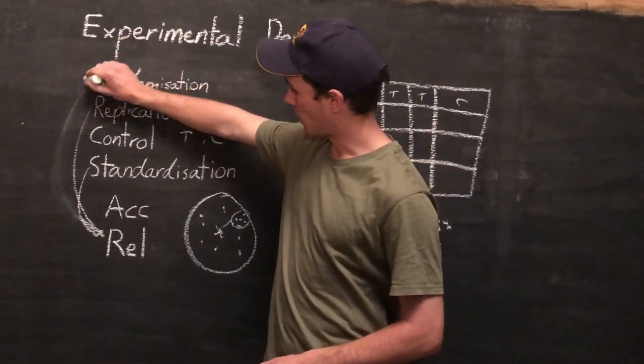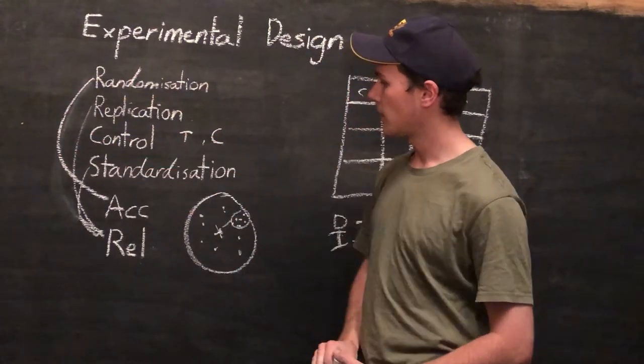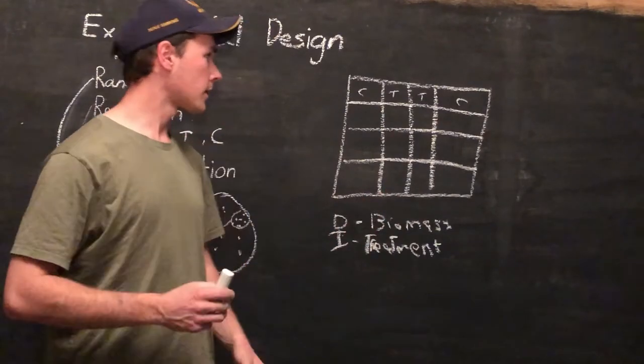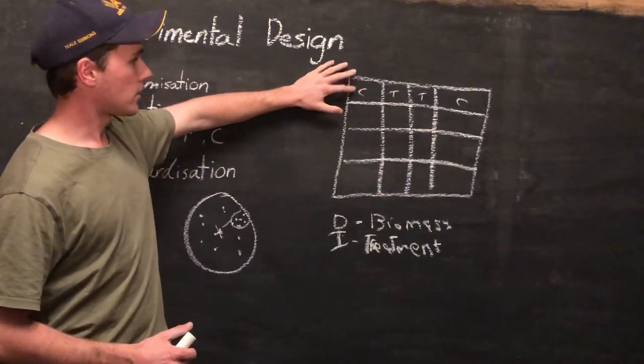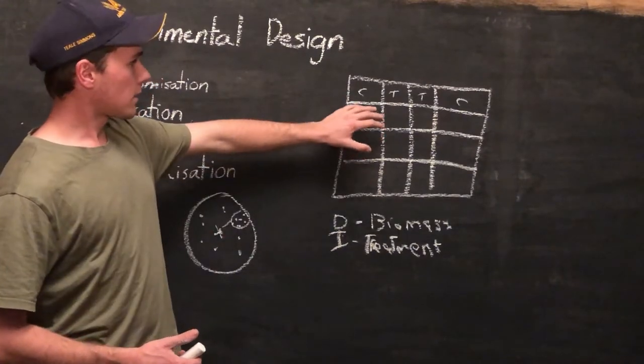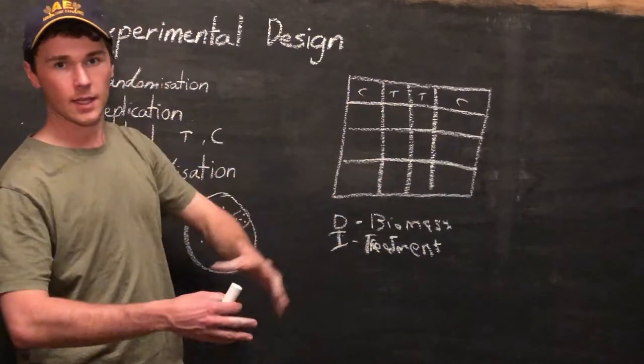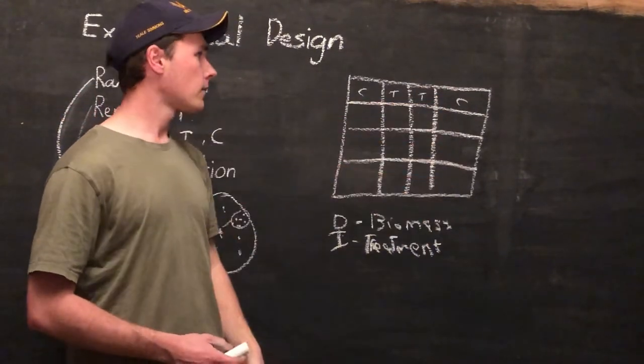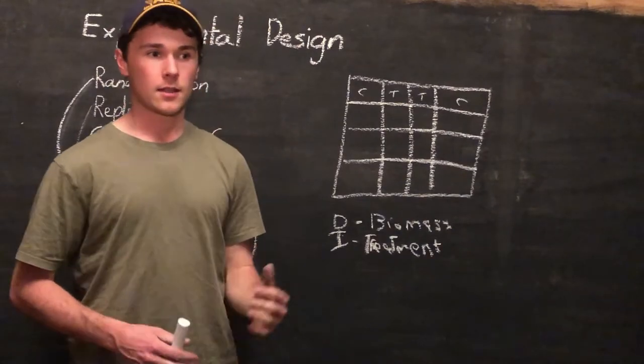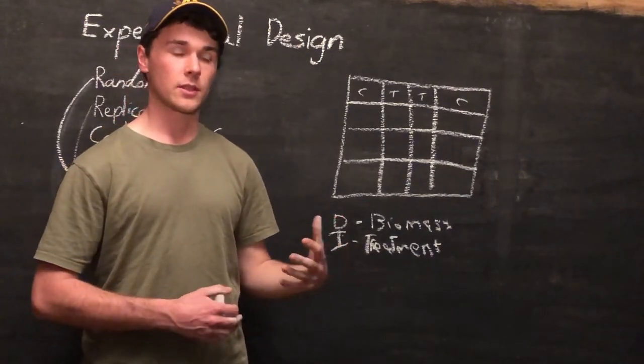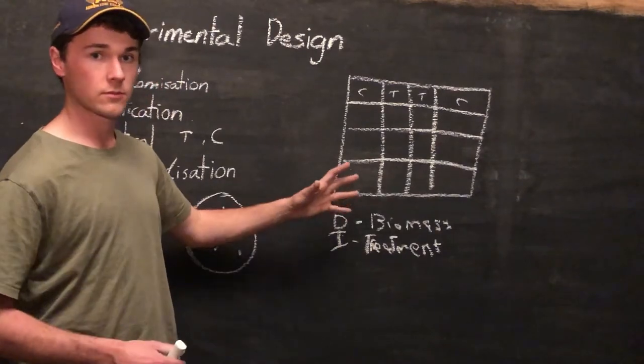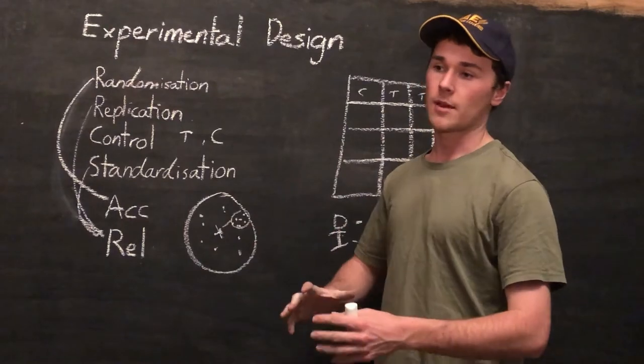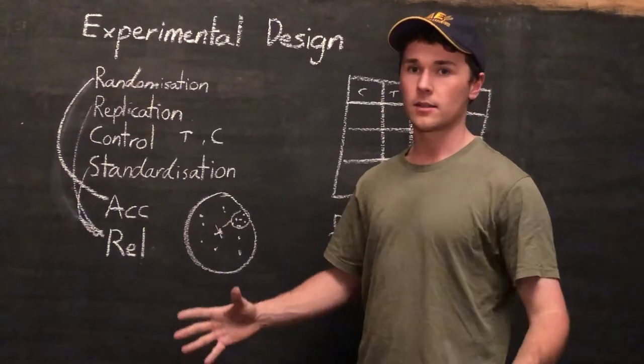So randomization is going to affect the accuracy. So in this example, we want to know the real difference between the yields of our treated and our control. If we have the control on an area of high fertility and the treated on an area of low fertility, we're getting skewed results. These results actually might be really reliable, but they're not going to be accurate to the real results. So that's why we want to make it as random as possible, so that variation is spread across all our trials.